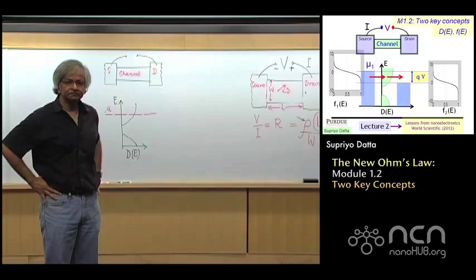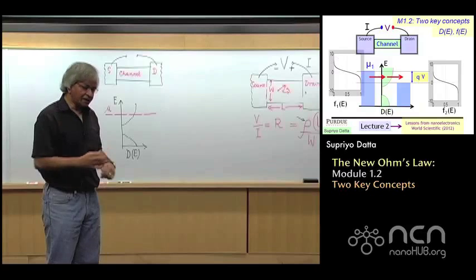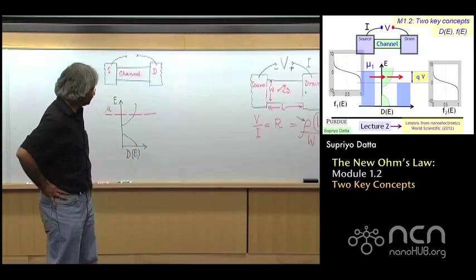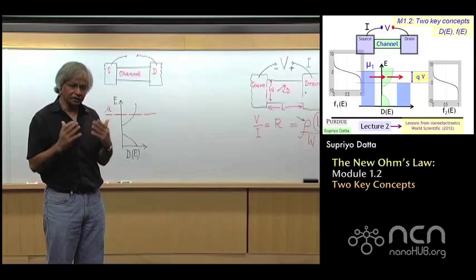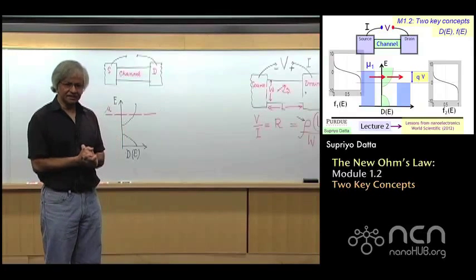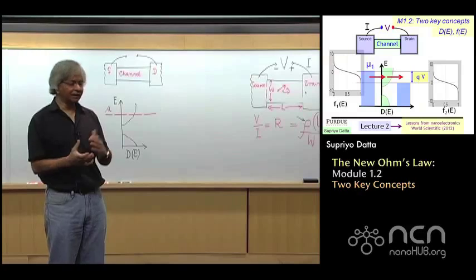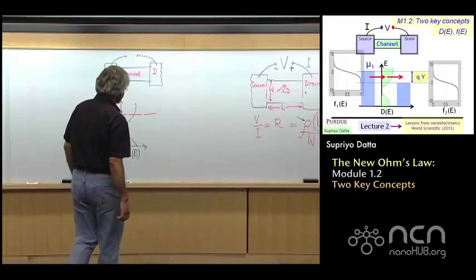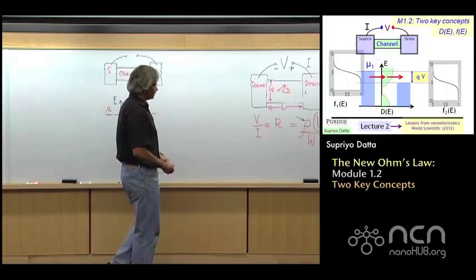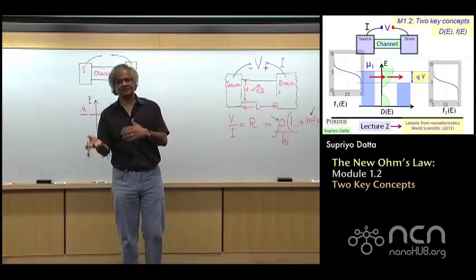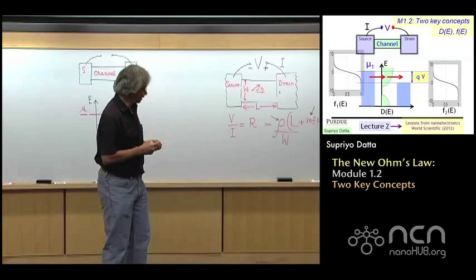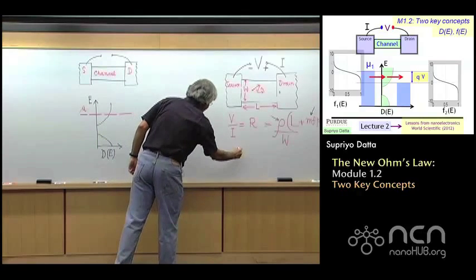This is module 1.2, and as we discussed in the first module, what we want to talk about is how you think about the resistance or the conductance, which is actually just the inverse of the resistance. So sometimes we talk in terms of resistance, sometimes we talk in terms of conductance, which you write as G.